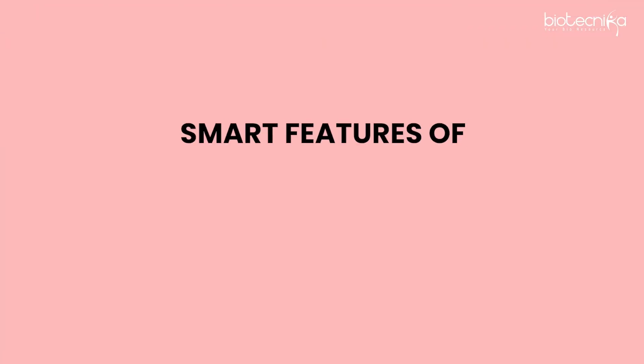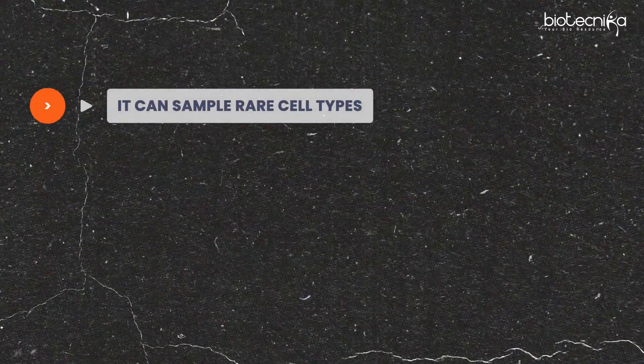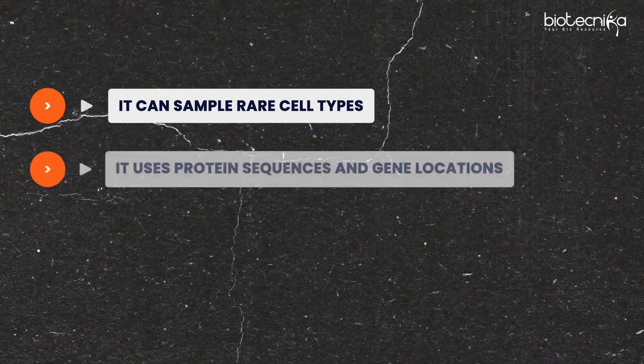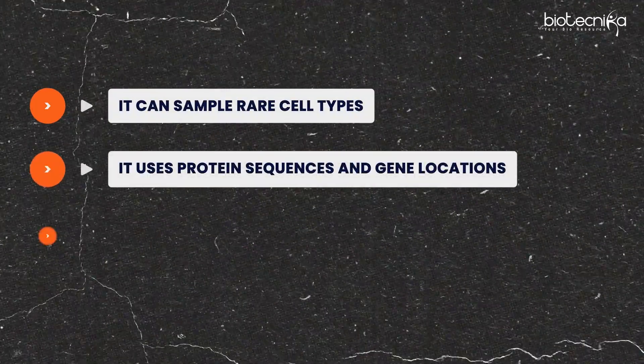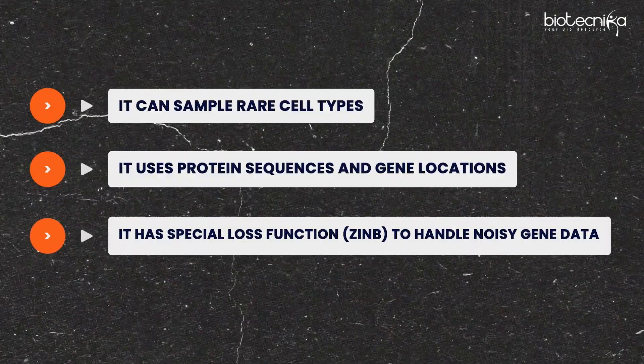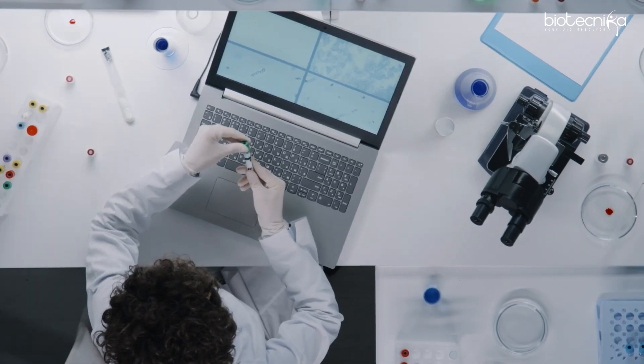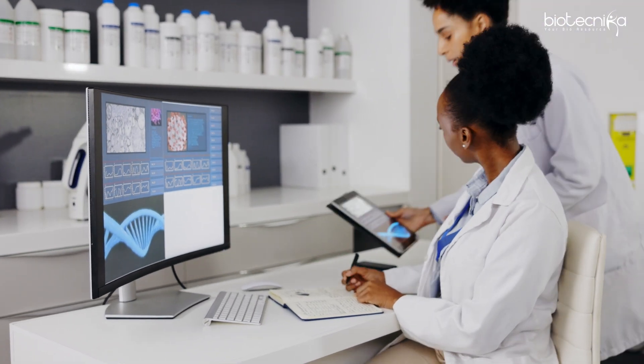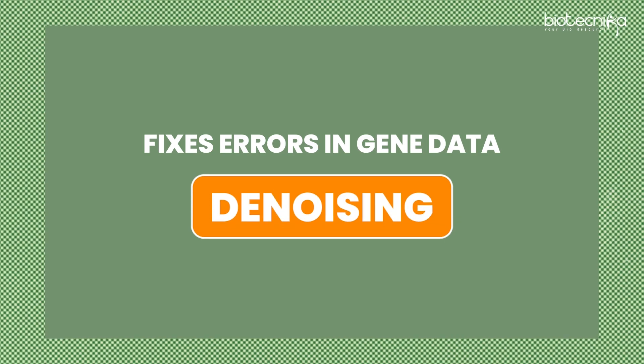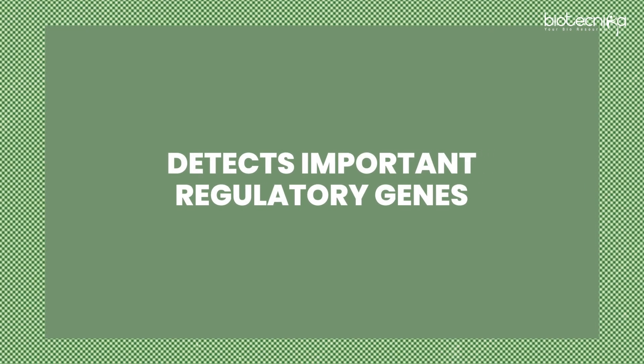Cprint learns how a gene regulates others and responds to diseases — finding the grammar of life. Its smart features include sampling rare cell types, using protein sequences and gene locations, and a special loss function called ZINB to handle noisy gene data. It has zero-shot prediction, meaning it can perform new tasks it was never trained on, fixes errors in gene data (denoising), and detects important regulatory genes.